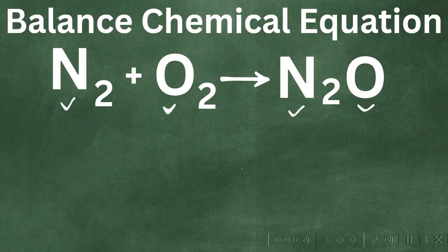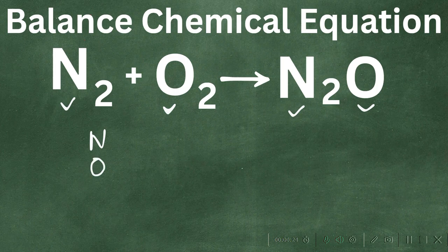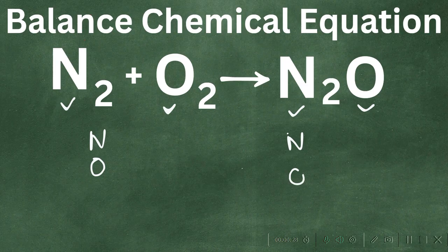Let's first begin by counting atoms and see if we are balanced or not. We have nitrogen and oxygen, and then we have nitrogen and oxygen.